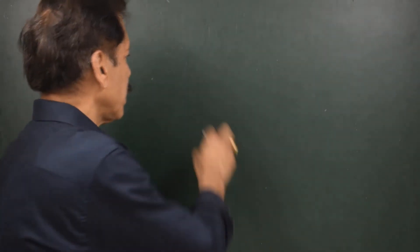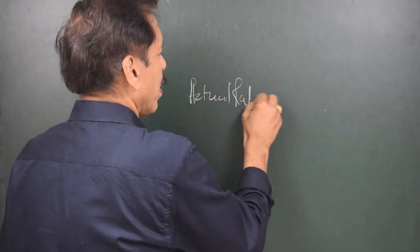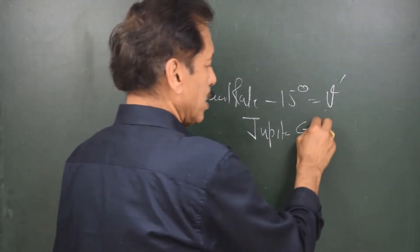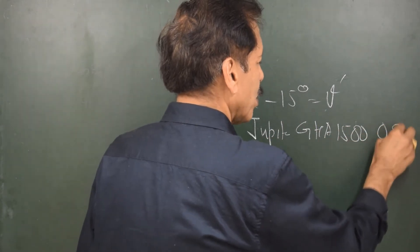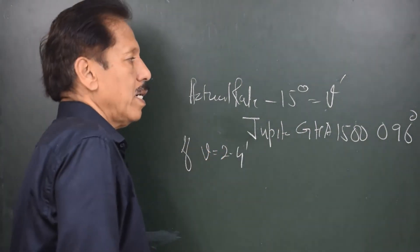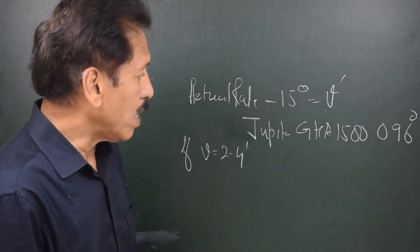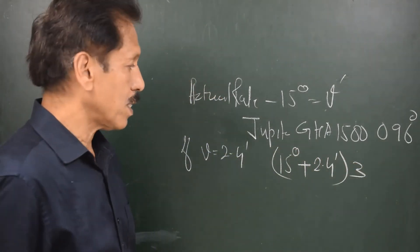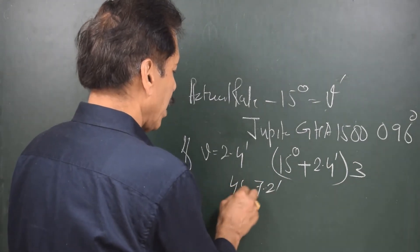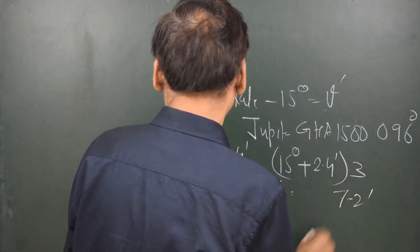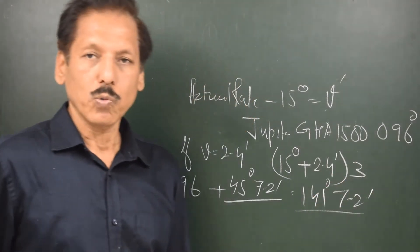For planets, the general formula is: V of the planet = actual rate minus 15 degrees. Let's take Jupiter — GHA at 1500 hours is 096 degrees, and V is 2.4 minutes per hour. After three hours, the increment is (15 degrees + 2.4 minutes) × 3 = 45 degrees 7.2 minutes. So the new GHA will be 141 degrees 7.2 minutes.